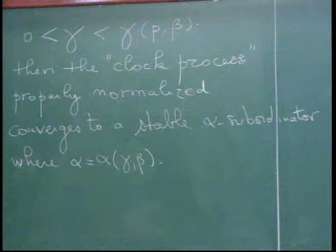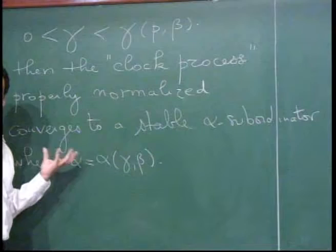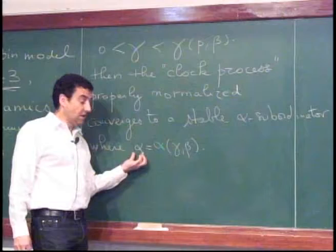The clock process is an α-stable subordinator, where α is a function of γ and of the inverse temperature. This says that what you see is something like a Bouchaud trap. This α is not given a priori — we don't have heavy tails in this model. There are no heavy tails. But at a given exponential timescale, you see heavy tails whose exponent depends on the timescale.